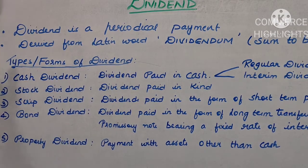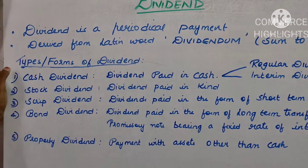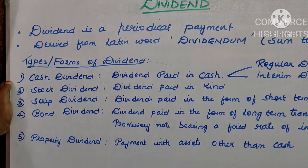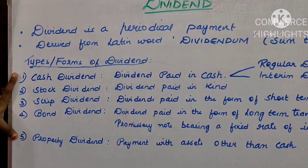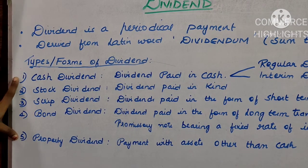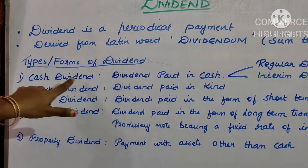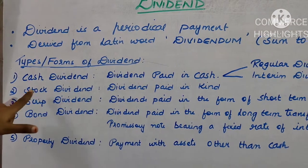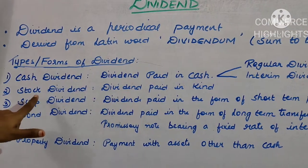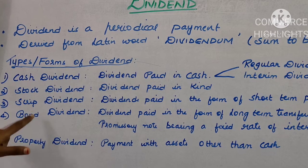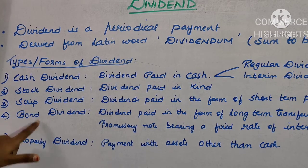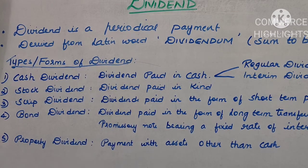Coming to the types or forms of dividend, we have five types. The first one is cash dividend, the second is stock dividend, the third is script dividend, the fourth is bond dividend, and the fifth is property dividend.